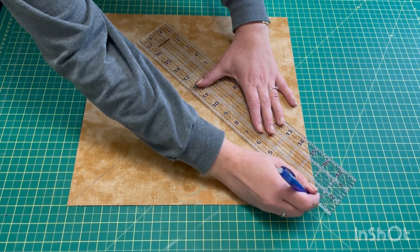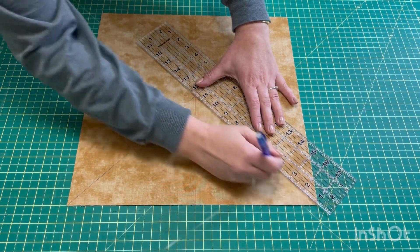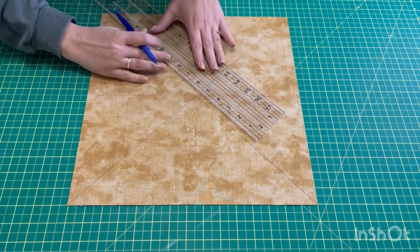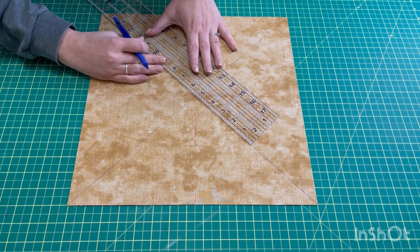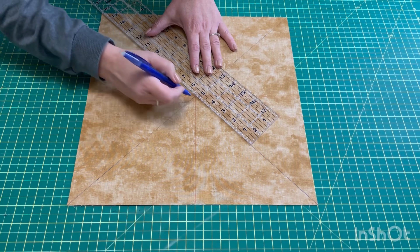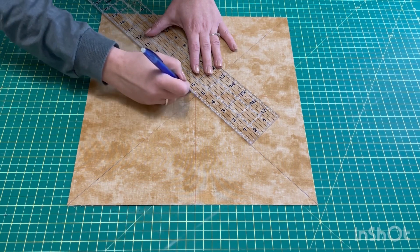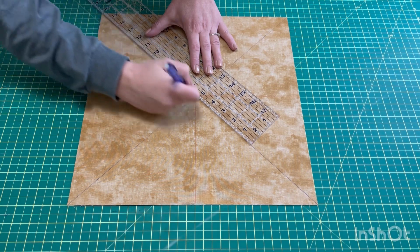So you have a big plus sign and a big X and then we're going to mark some more diagonal lines to mark it into grids. Basically you're going to have four quadrants that are going to be your half square triangles and then we'll cut them apart later on. I love half square triangles because they're easy to make and the patterns you can do with them are almost endless.